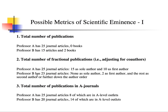Whereas Professor B also has 25 journal articles, so if we're only looking at the number of journal articles they would be tied. But Professor B has none as sole author, two as first author, and the rest as second author or further down the author order. Therefore, all other things equal, Professor A has a stronger record.